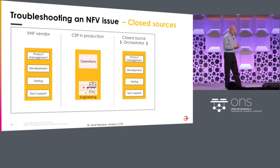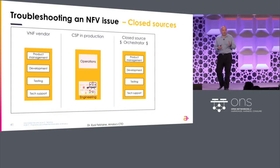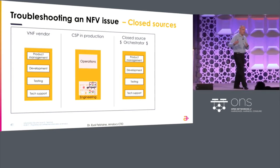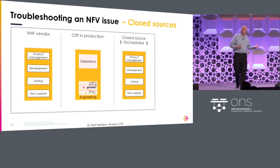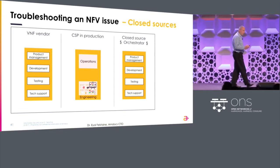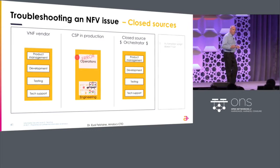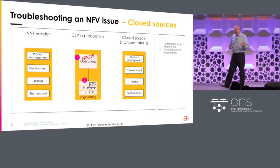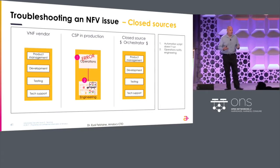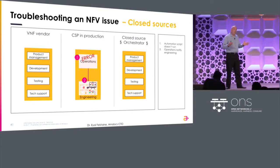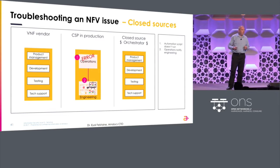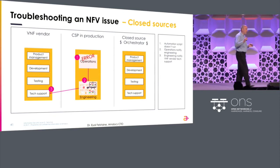Let's say you have an NFV issue. We have three pillars here: at the center, we have the CSP — the operator; at the right side, we have the closed source proprietary orchestrator company; and on the left side, we have the VNF vendor organization. What happens is the following: you have a problem, an error is discovered in operation. Somebody makes phone calls to engineering inside the operator — we need to troubleshoot something. Engineering and operations sit together, understand what the problem is, and they call the VNF vendor.